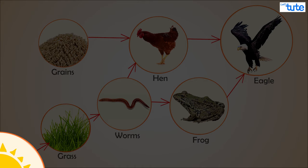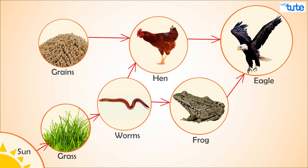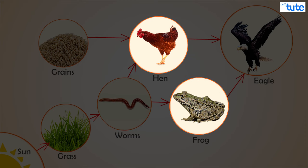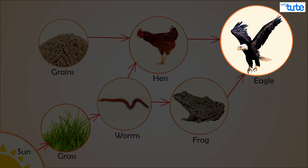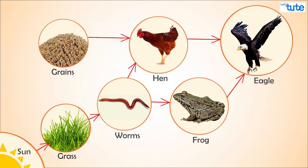A few important things to understand: the sun is the driving force for all — every food chain begins with a producer. Depending on the number of organisms involved in a food chain, the order of consumers can vary. The longest food chain we began with had consumers ranging from primary to secondary to tertiary and quaternary, but the food chain with hen and eagle is the shortest, with only primary and secondary consumers.